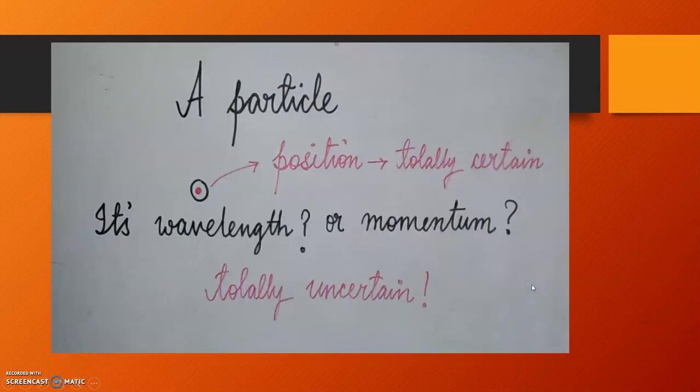On the other hand, when we think about a particle, say this is the particle, we know about the position of this particle with a totally certain value, that this particular particle is at this position. So, the position value is totally certain.